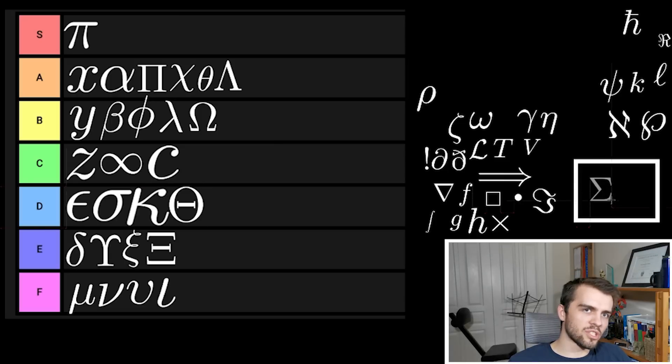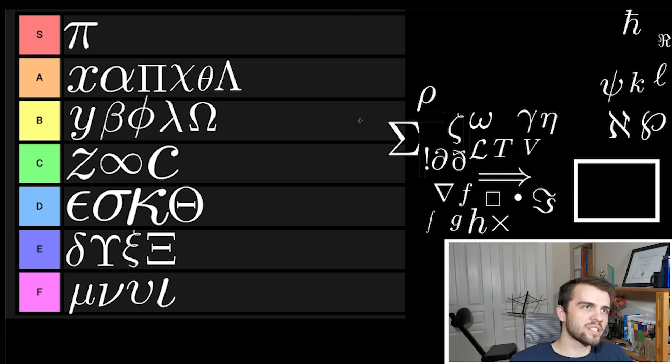Capital Sigma is a pretty cool symbol just because it's unique, it's sharp, it gets to the point. It almost looks like it would hurt to touch because it's kind of got claws to it. I think capital Sigma is A tier.